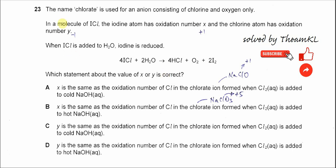Question 23. The name chlorate is used for an anion consisting of chlorine and oxygen only.